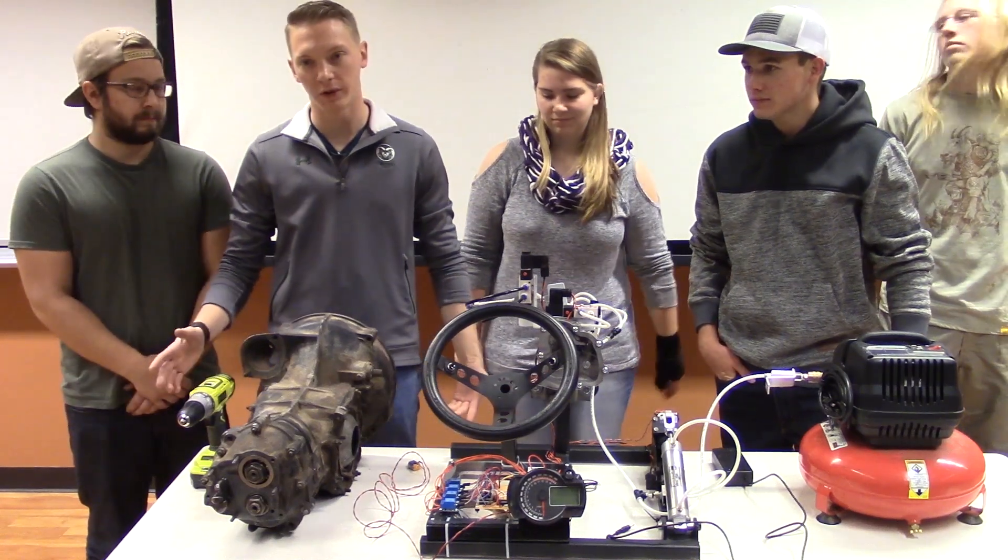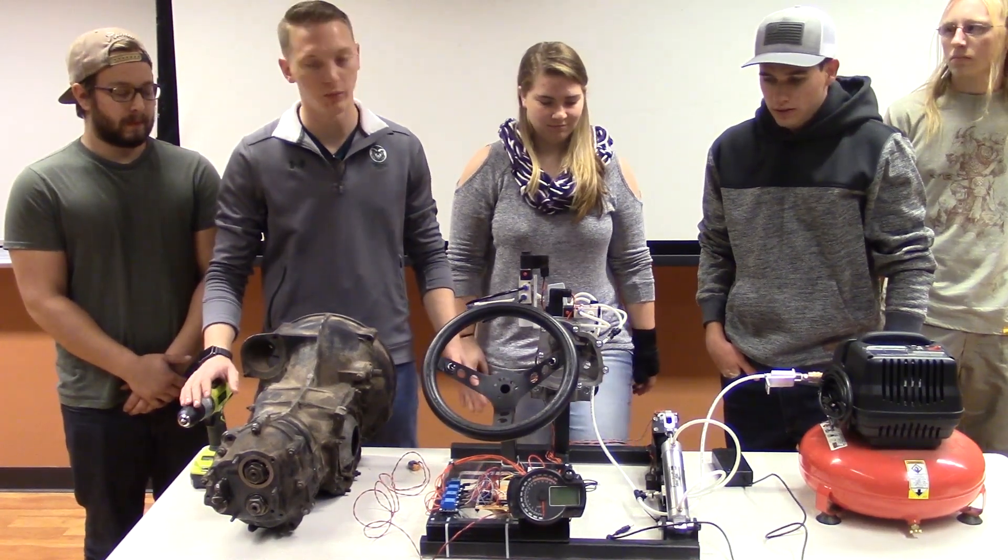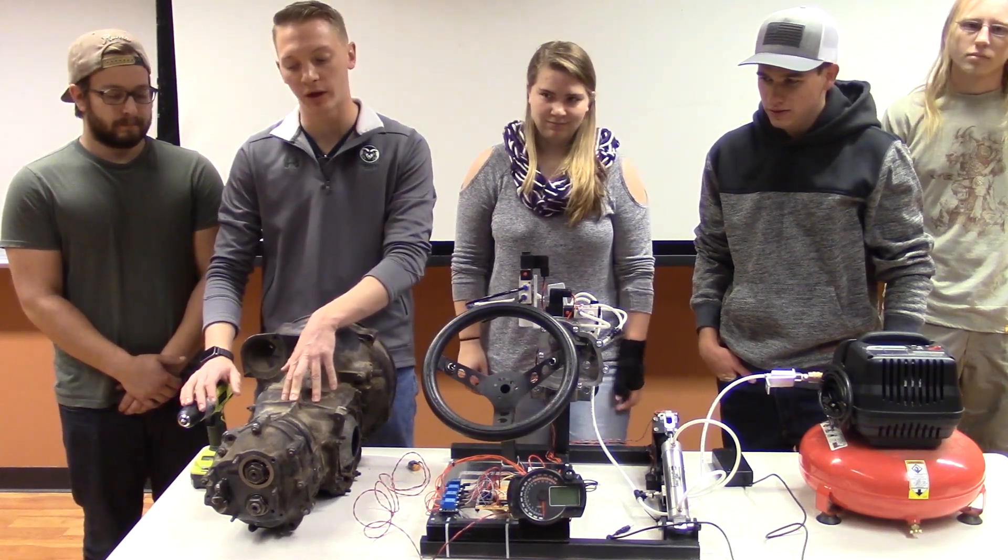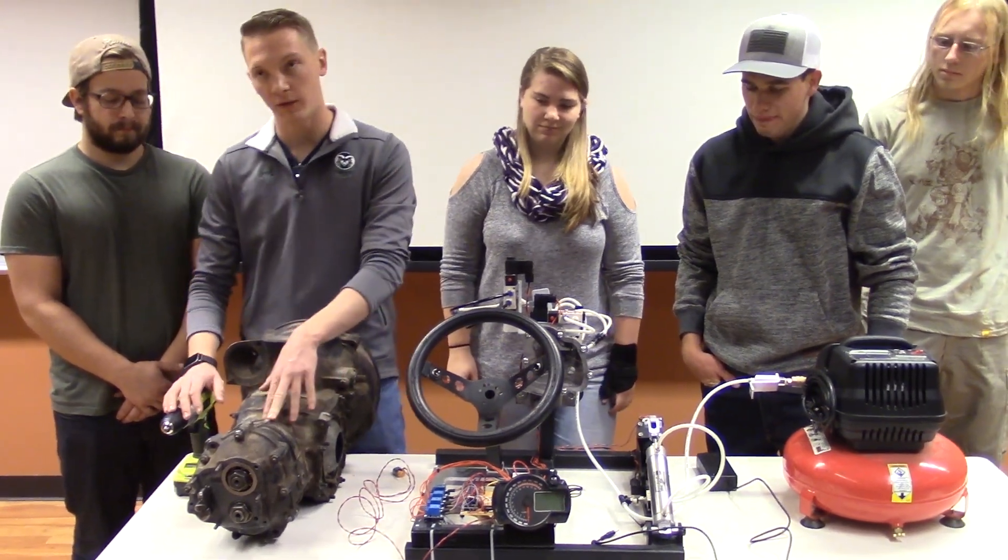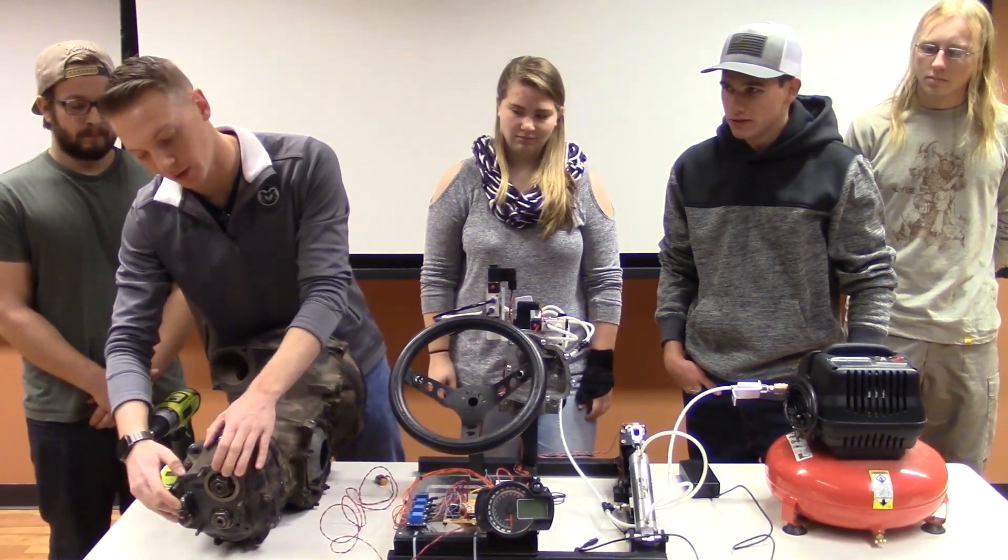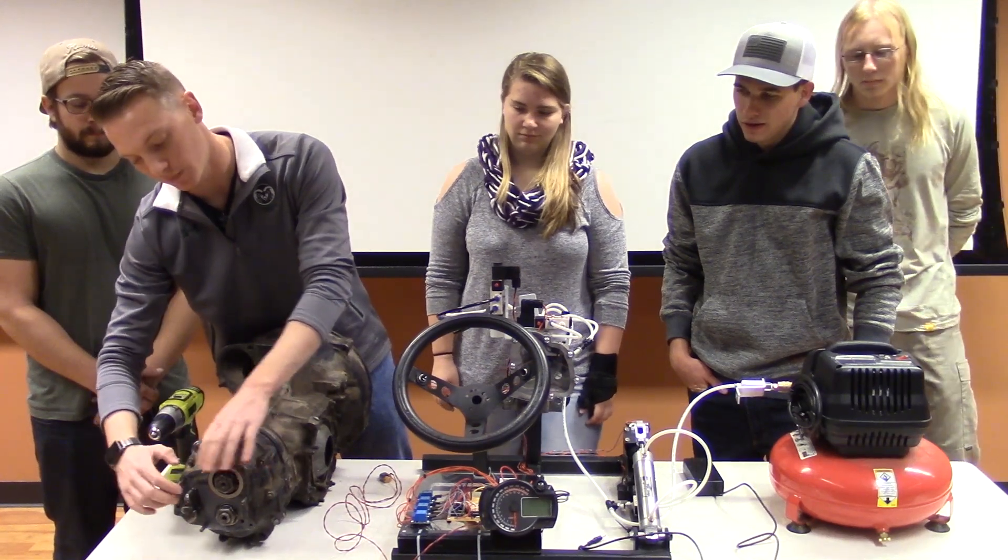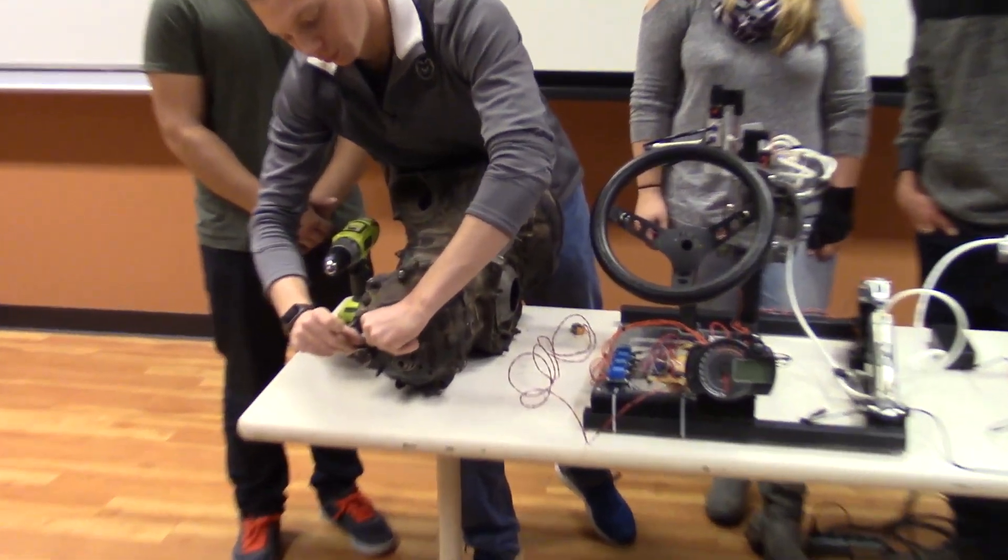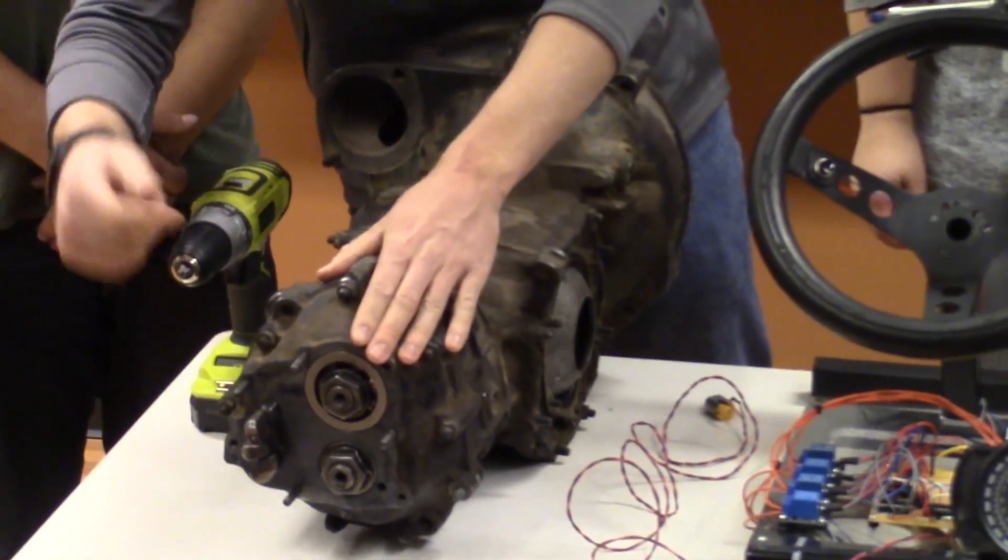We're Group 33 and we did a pneumatic paddle shifter for the Volkswagen transmission. This is a '59 through '68 Volkswagen transmission and how it shifts is there's these three little shift forks, and when you push it in that's in a gear, and when you pull all the way out that's in the next gear.